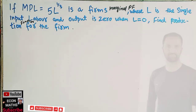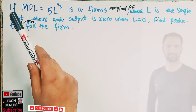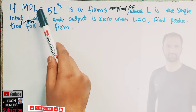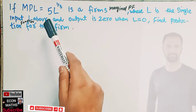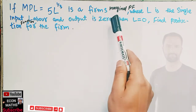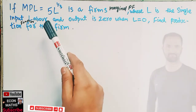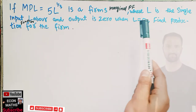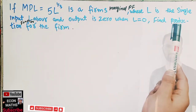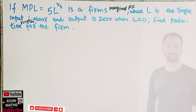In this video we will try to solve a problem that was asked by a brother on the Telegram channel of Econ Math. The question is: if the marginal product of labor is equal to 5L to the power 1/3, which is a firm's marginal product function where L is the single input labor, and output is 0 when L is equal to 0, find the production function for the firm.